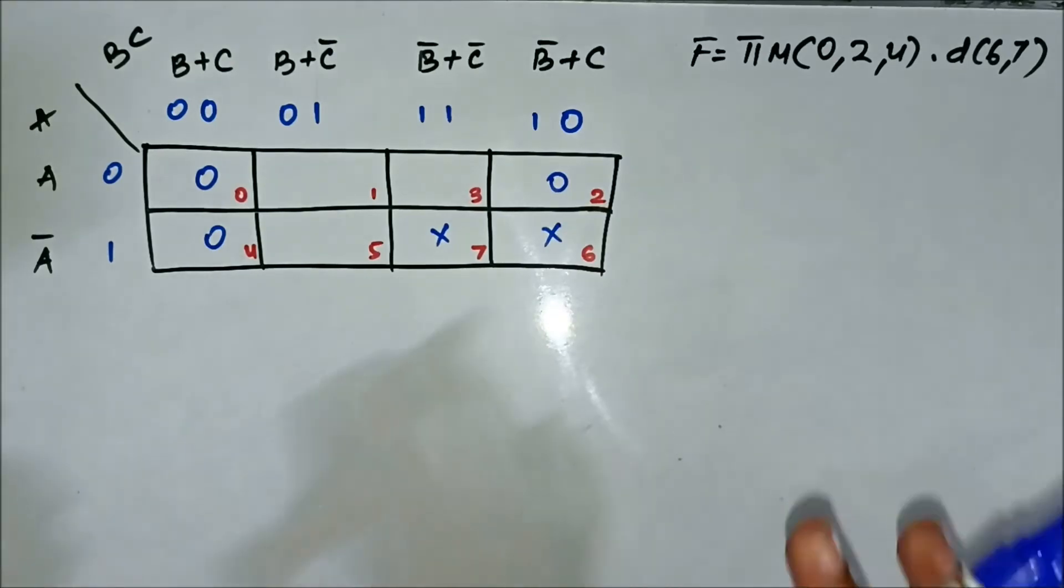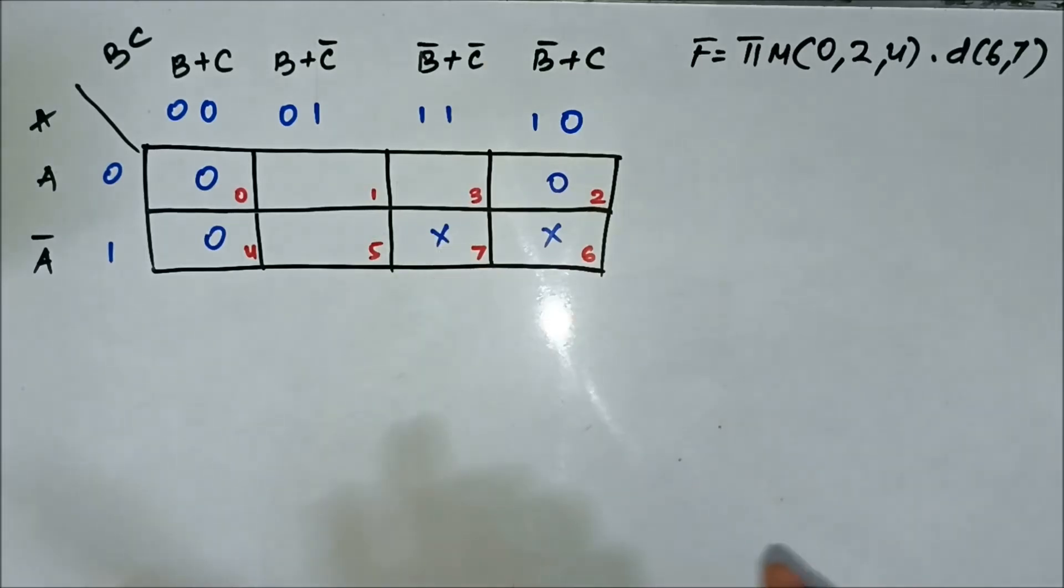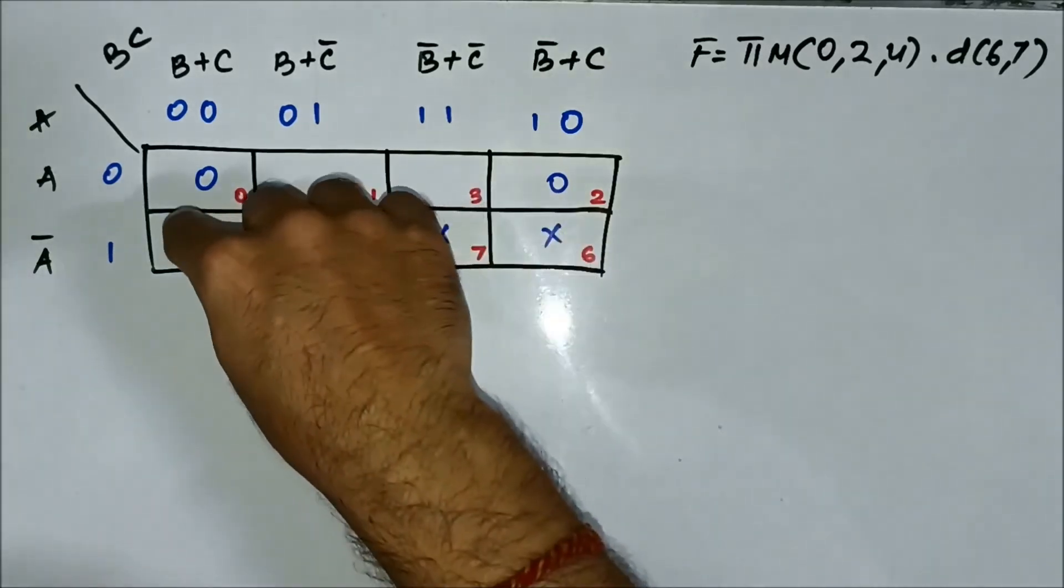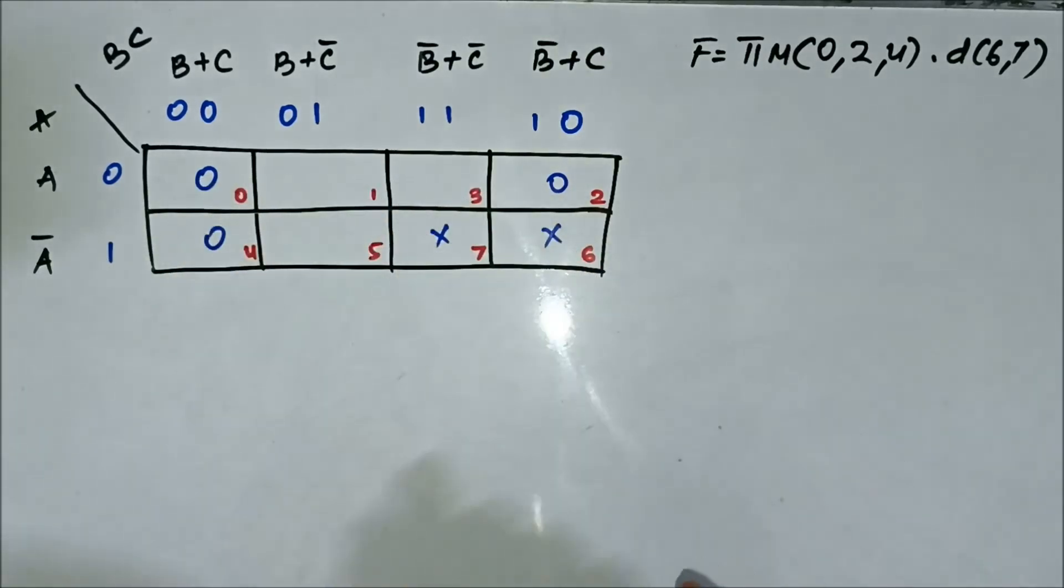If you remember the rules which we discussed for group formations in don't care cases, here it is not necessary to group the x-marked cells. But they assist in group formation by combining them with the 0-marked cells or the 1-marked cells.